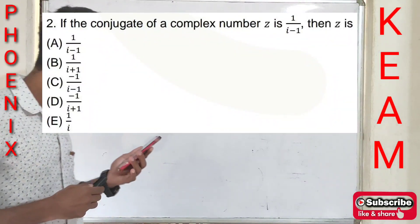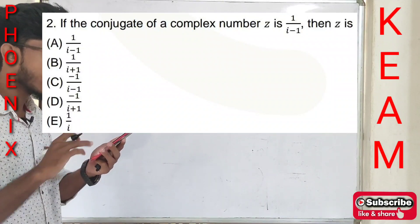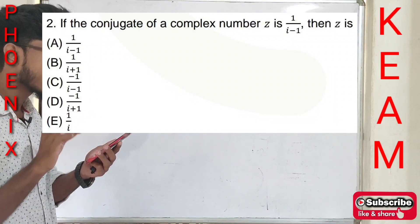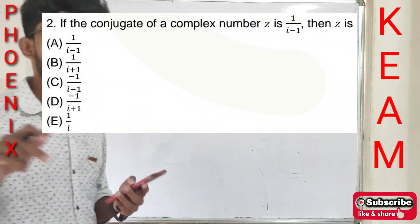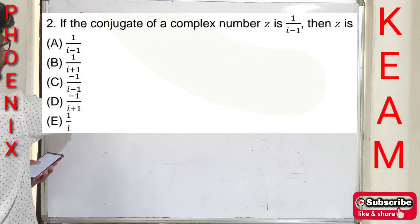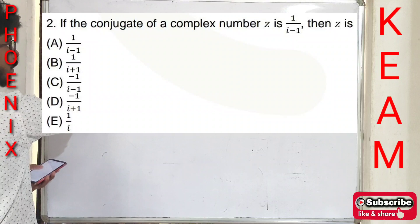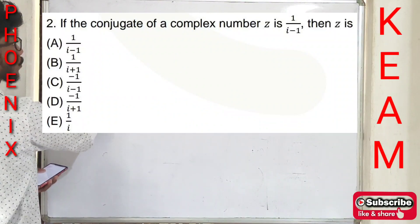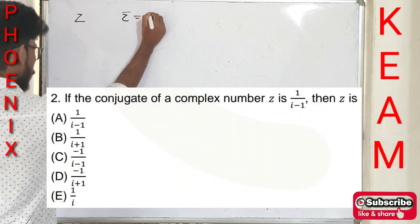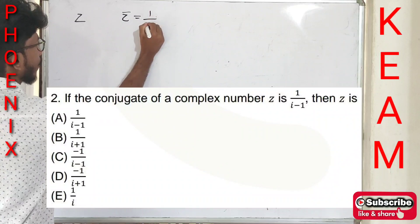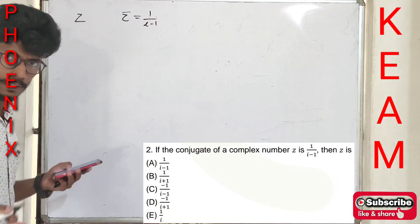Let's do the next question. If the conjugate of a complex number z is 1/(i − 1), then z is — find the complex number.